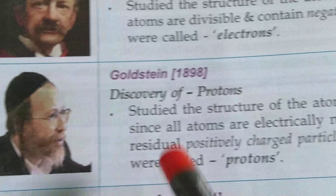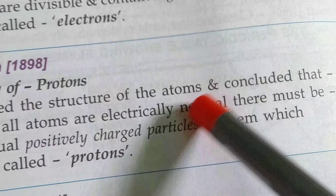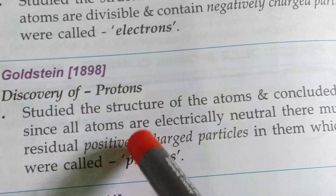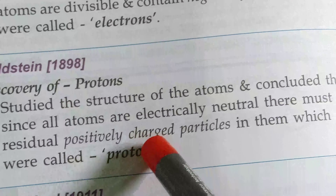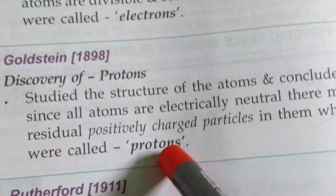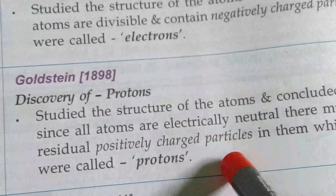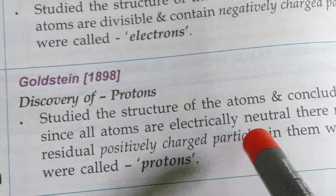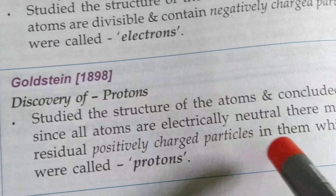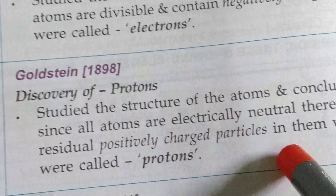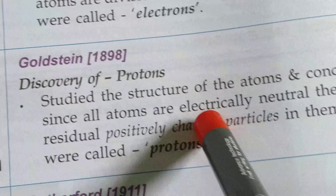Next, Goldstein — discovery of protons. He studied the structure of atoms and concluded that since all atoms are electrically neutral, there must be residual positively charged particles in them, which were called protons. In the center of an atom there are protons and neutrons — neutrons have no charge, but protons are positively charged. Electrons in the orbit or shell are negatively charged, making the atom electrically neutral.